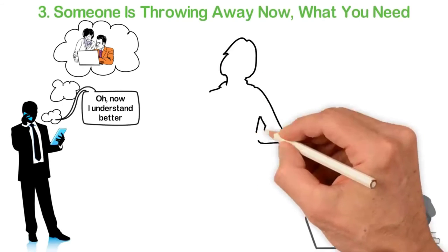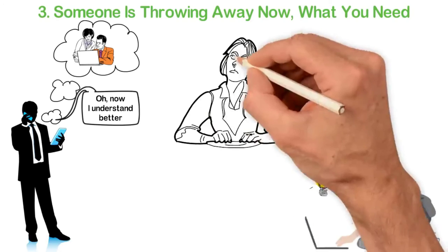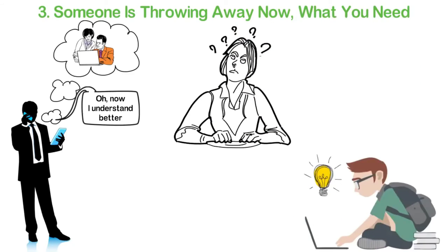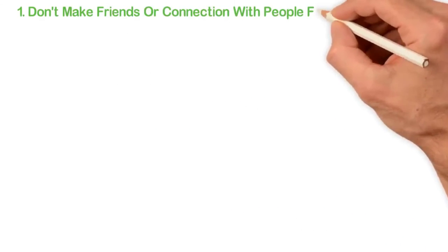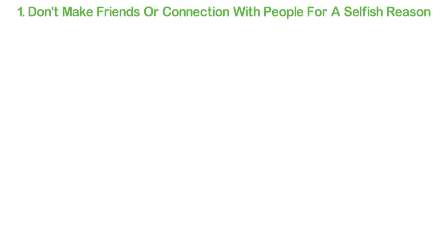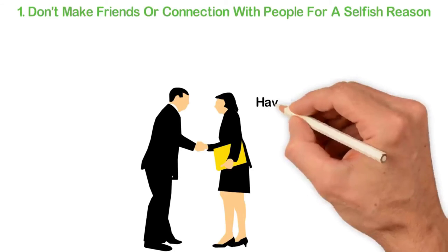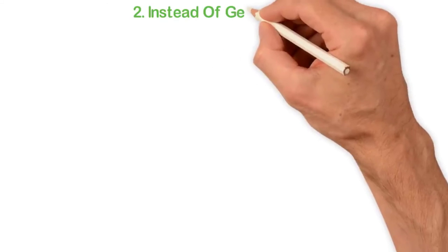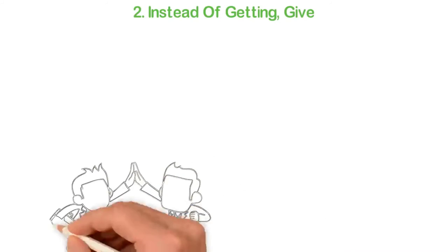Now, if I have convinced you that the number one skill you should have is the ability to connect with positive-minded people, how exactly are you supposed to do that? Don't make friends or connection with people for selfish reasons. No one loves to be used, so when you try to connect with people, don't do it primarily because you want to get something from them. Instead, have genuine love for people. Instead of getting, give. Instead of trying to use people, make sure you offer to help people as much as you can.